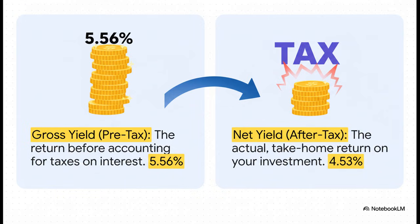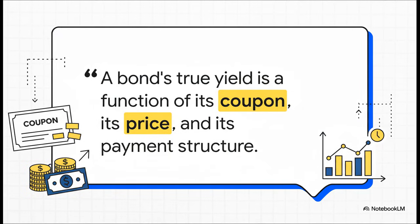Buying it at a discount shot the pre-tax yield all the way up to 5.56%. But then, after taxes took their bite, our true take-home yield landed at 4.53%. And that whole journey from 4% up to 5.56% and then back down to 4.53% is exactly why you have to do the math. So if there is one thing you remember from all this, it's this.